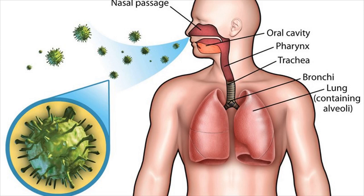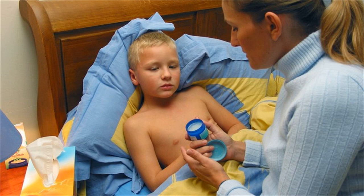Bronchitis and upper respiratory infections both refer to respiratory problems. The distinct difference between these two conditions is due to the location of the infections and symptoms. The bronchial tree represents the dividing tubes of the lower airway. Inflammation of the mucous membrane in these bronchial tubes is referred to as bronchitis.